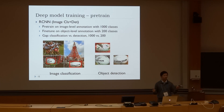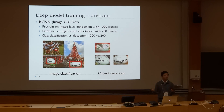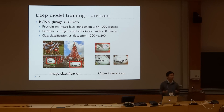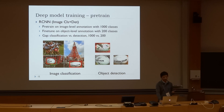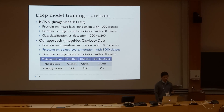For image classification, for example for the rugby ball, we have to deal with the scale and translation of the object within the image. However, for object detection, we don't have this problem. So the network trained for these two tasks will be different.